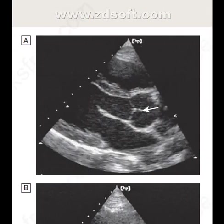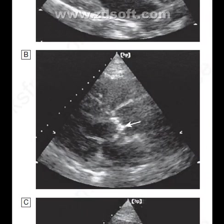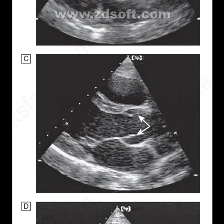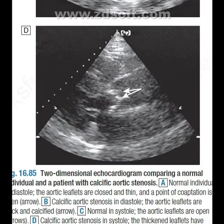Figure A shows a normal aortic valve in diastole, where the valve is thin. Figure B shows calcific aortic stenosis, with thickened and calcified aortic leaflets in diastole. Figure C shows a normal aortic valve in systole, with normal aortic leaflets. Figure D shows calcific aortic stenosis in systole, where the thickened leaflets have barely moved.